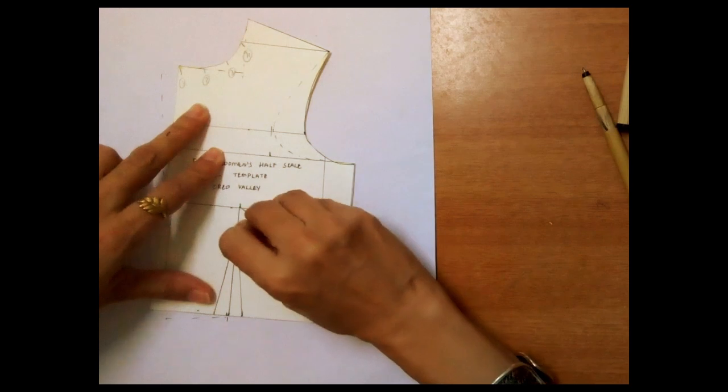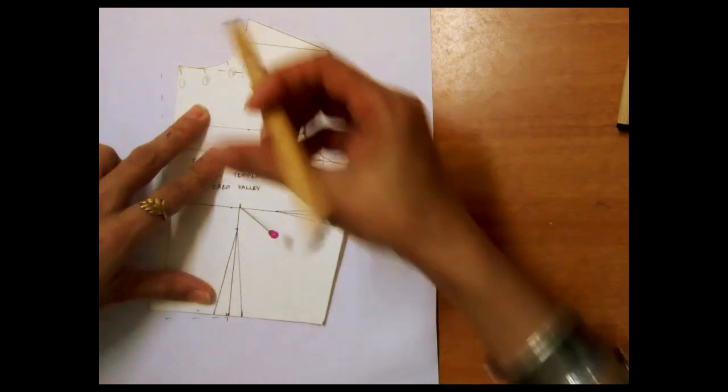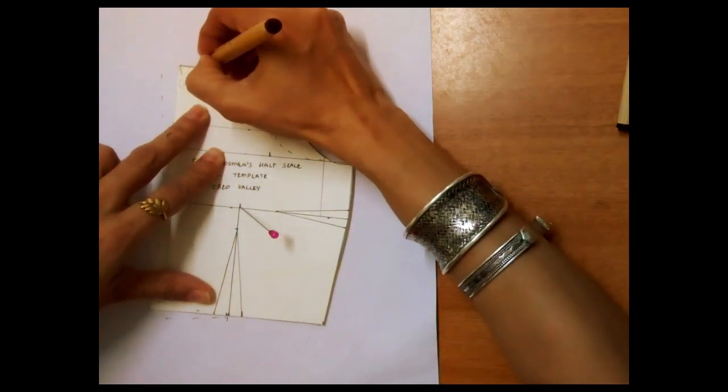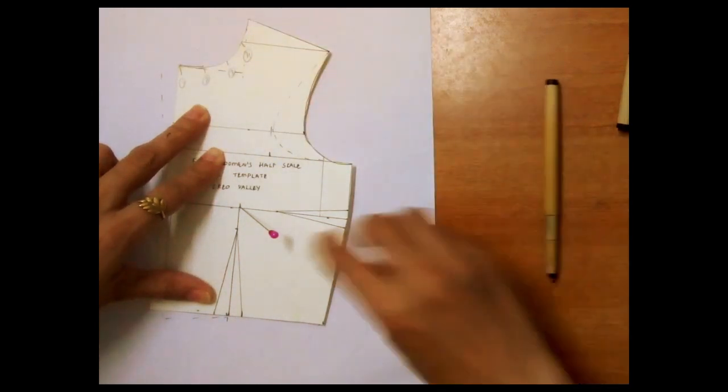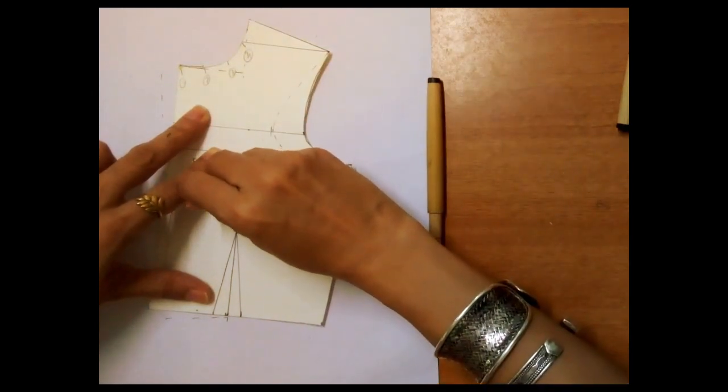I will pivot the pattern and half close this dart. I will now trace the neck from the corner until the second position of the dart at the neckline.